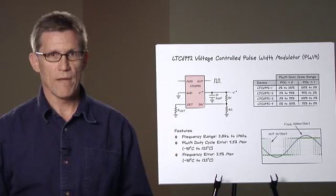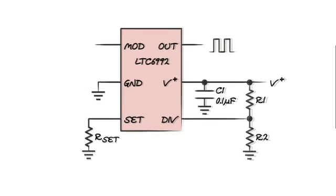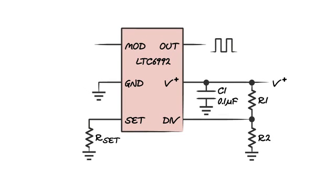The next part in the family is the LTC6992 voltage controlled pulse width modulator. Here, the part specific pin is the mod pin. This pin is a high impedance analog input that modulates the duty cycle of the output voltage.